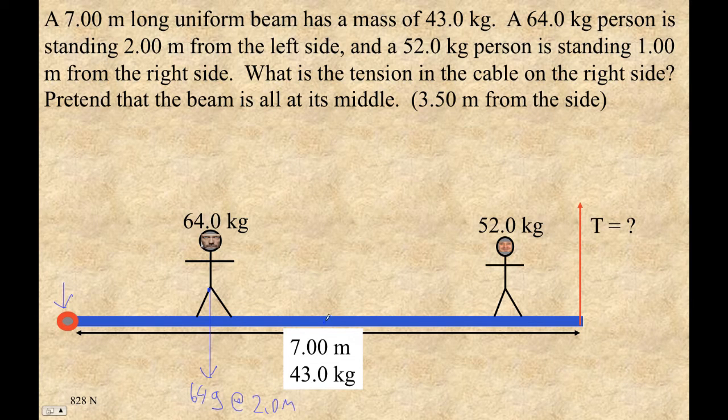And then the beam itself is 43 times G, and the G is 9.8, not grams, but the gravitation constant. And then it's seven meters long, so the beam is, the center of the beam will be 3.5 meters, and that's where we say the gravity of the beam acts, is at its center of gravity. That's why it's called that.